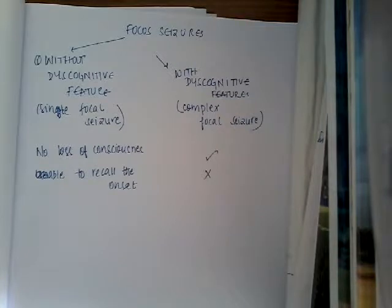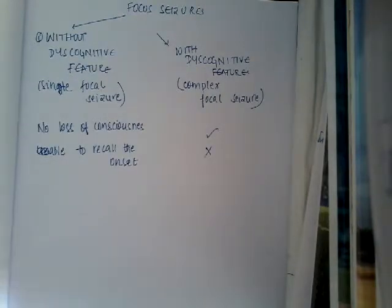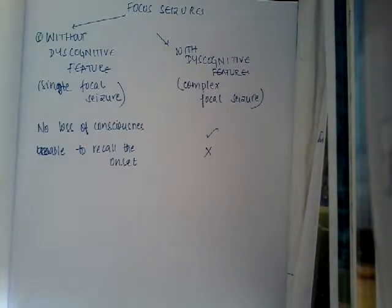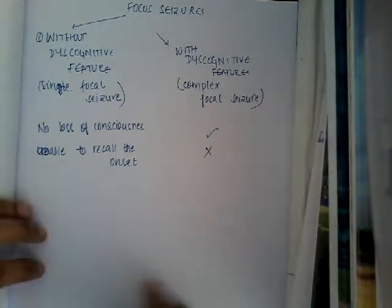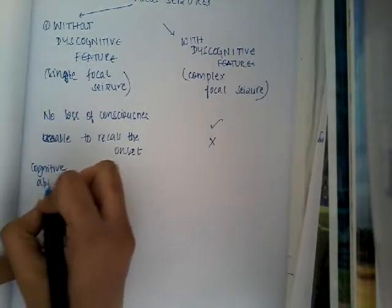Let us learn about focal seizures without discognitive features. This type can have motor symptoms, sensory symptoms, autonomic symptoms, or psychic symptoms. But the person does not have impairment in cognition — his cognitive abilities are normal.